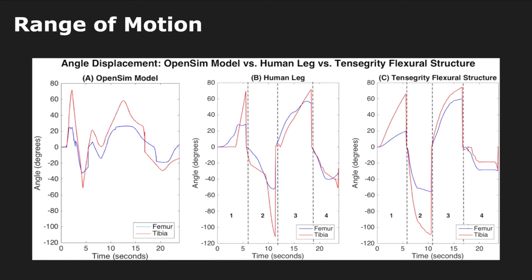This plot gives an accurate depiction of the simulators between the ranges of motion of the human model, the OpenSim model, and the tensegrity flexural joint.